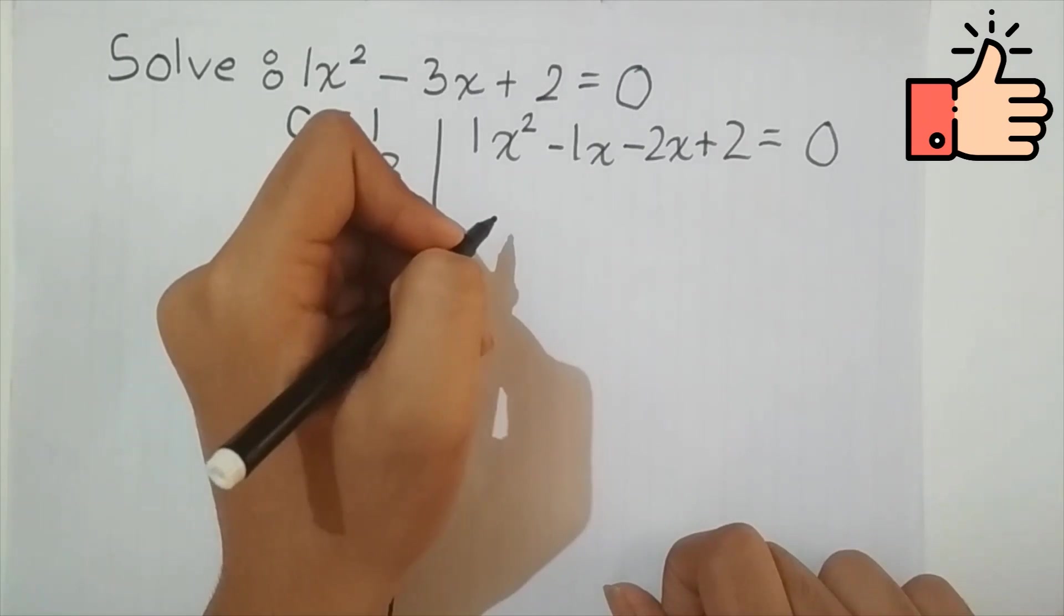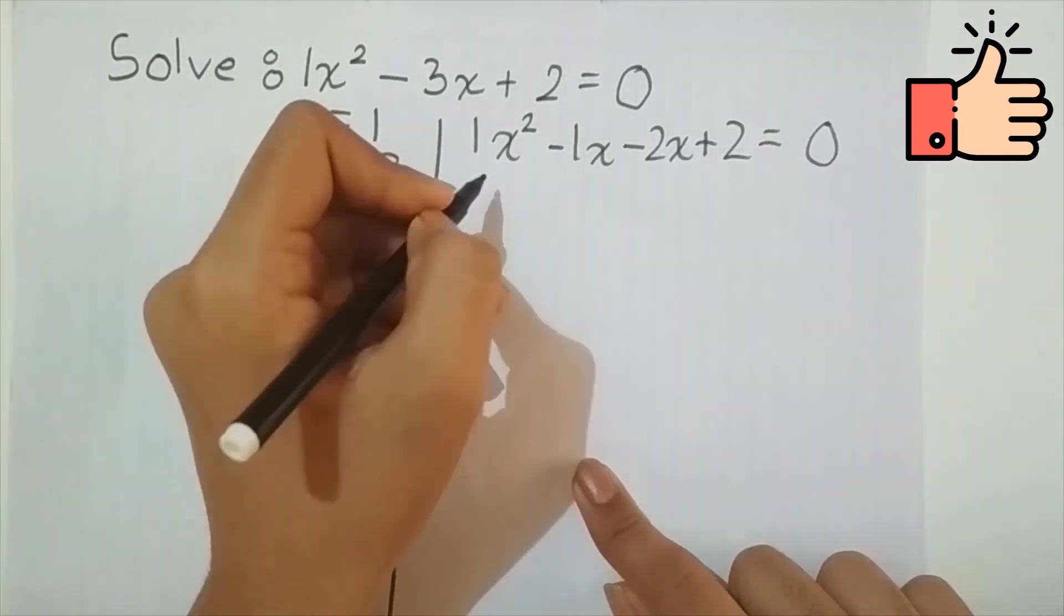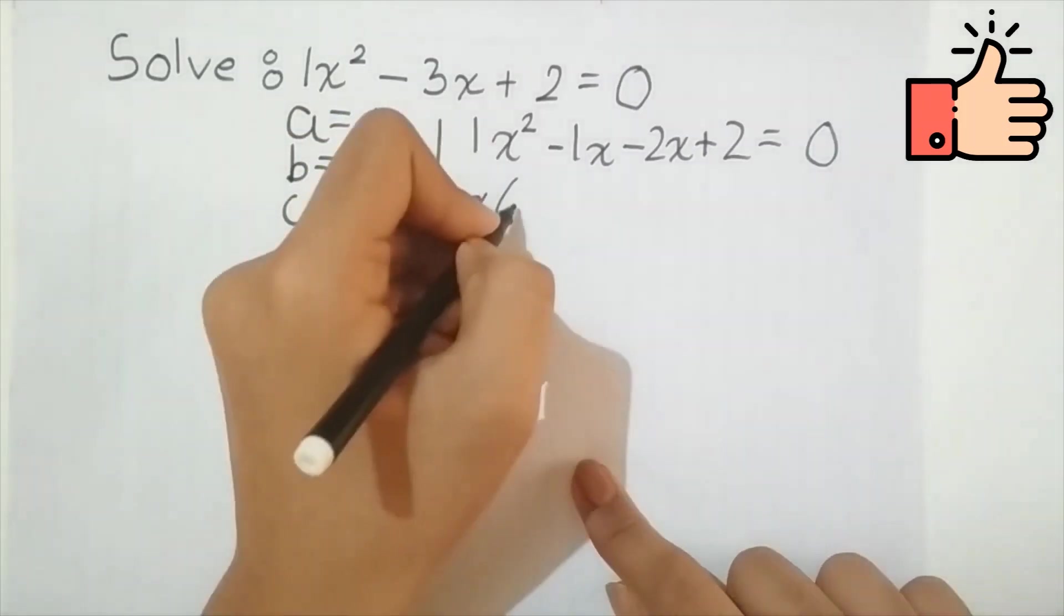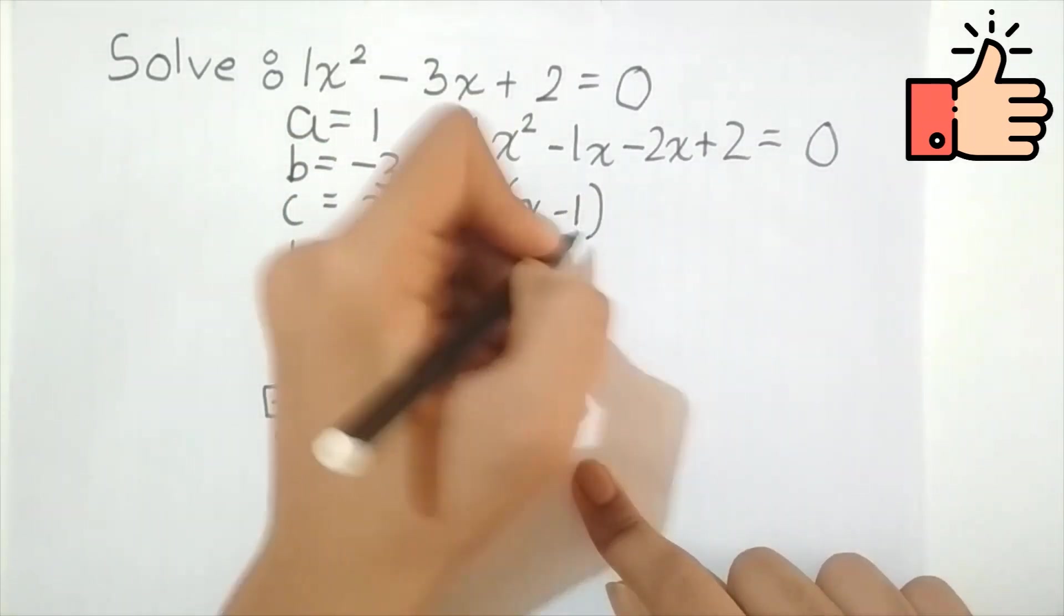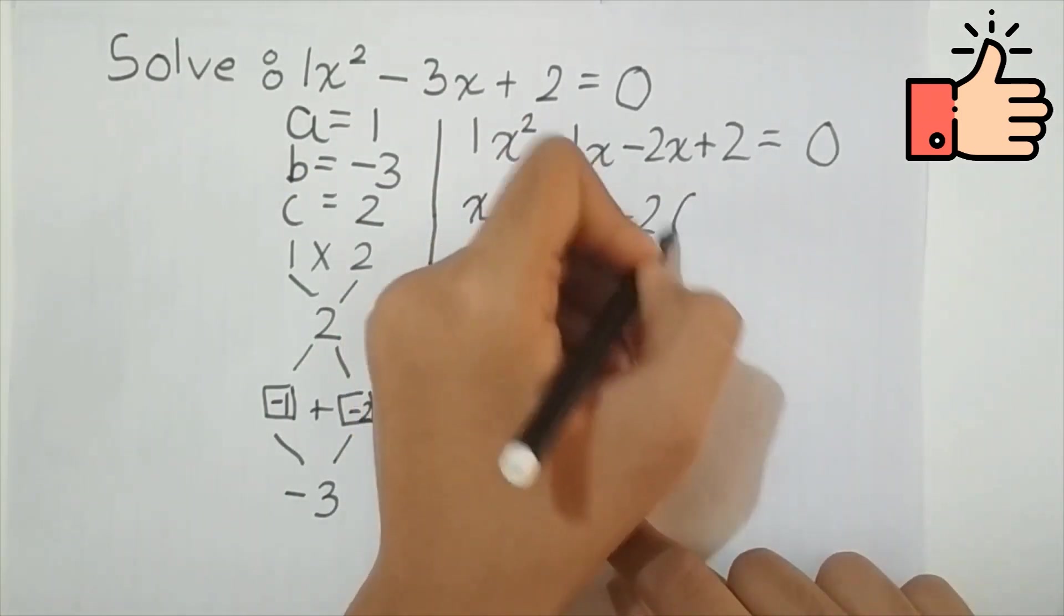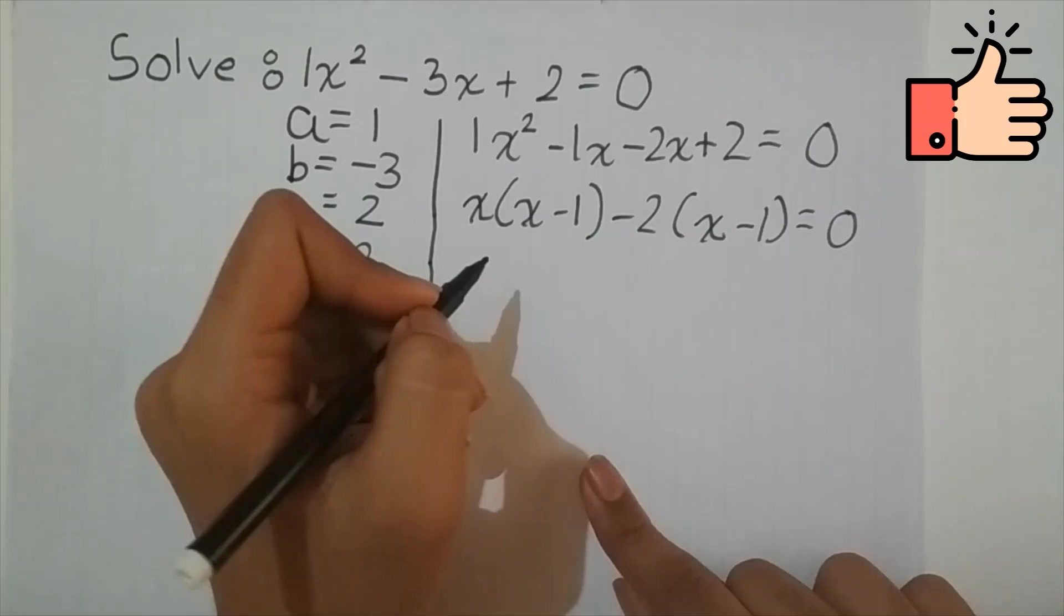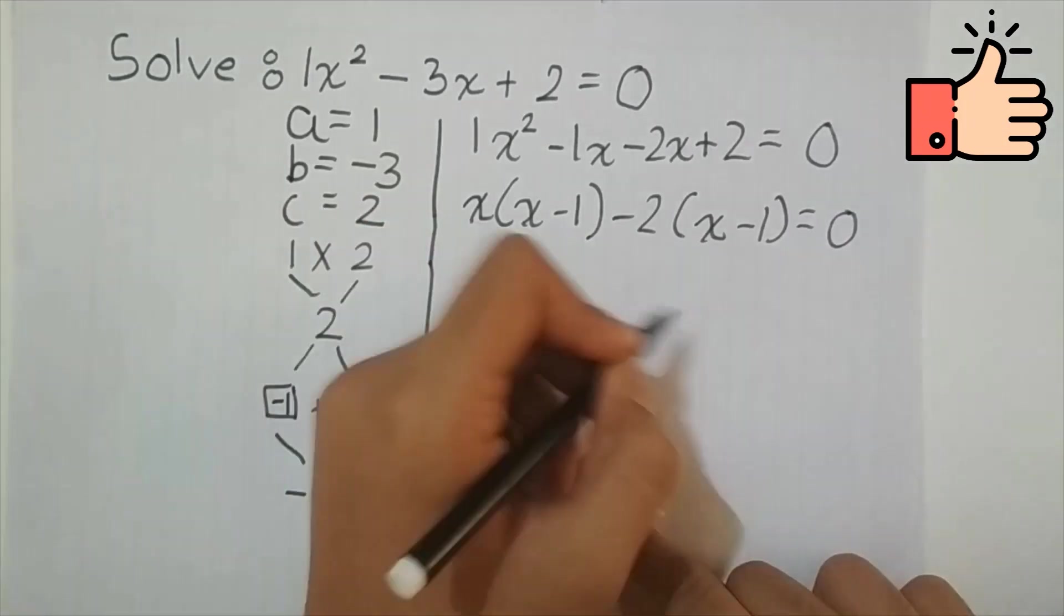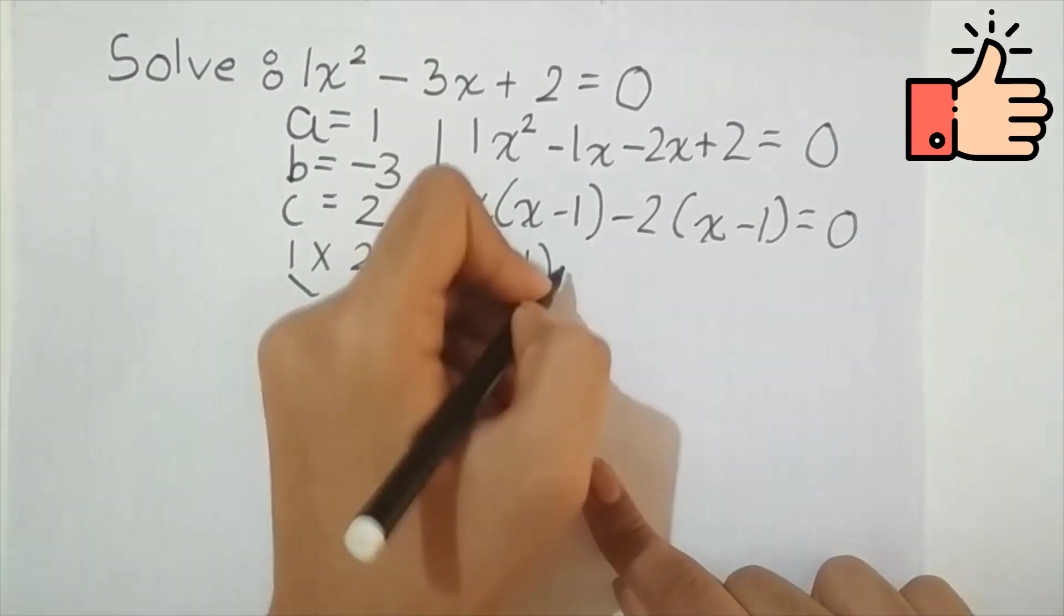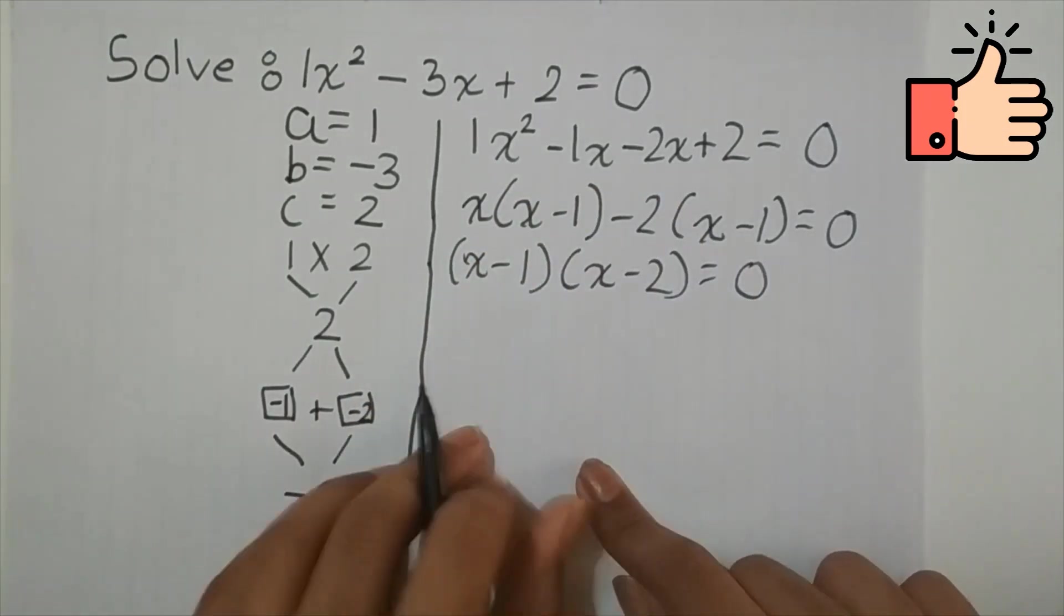Now to factorize into two brackets, we take x common from the first two terms and minus 2 common from the last two. x minus 1 is common in this whole expression, so we will write x minus 1 times x minus 2 is equal to 0. And we have factorized it.